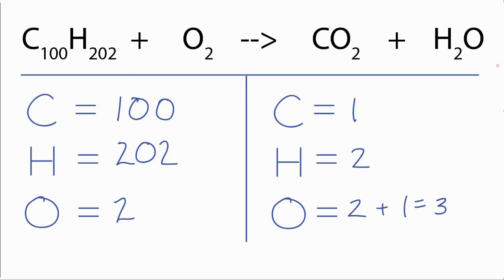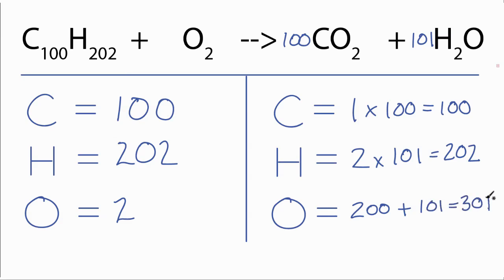Let's balance this. We need a hundred carbons over here, so 100 times the one gives me 100 carbons. For my hydrogens, I need 202. So let's put 101 in front here, because 2 times 101 equals 202. And now we need to recalculate our oxygens. I have 100 times 2, that's 200, plus 101 times the one, that is 101. So I have 301 oxygens to deal with.